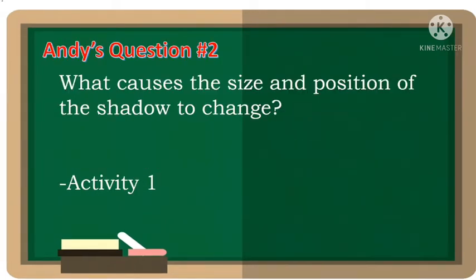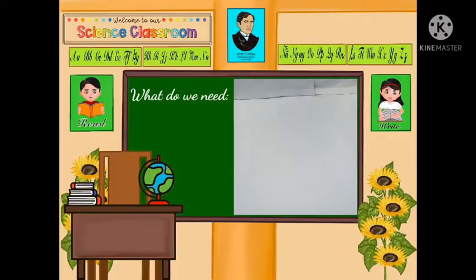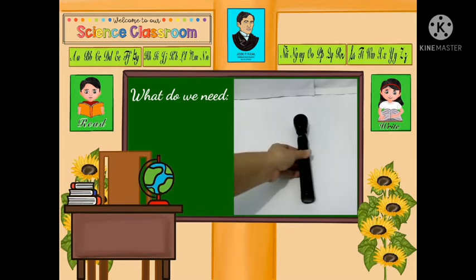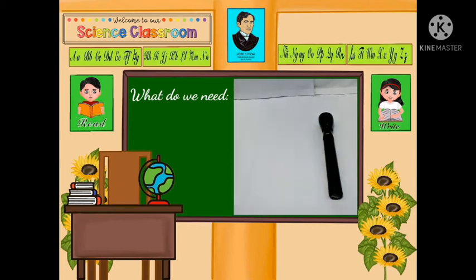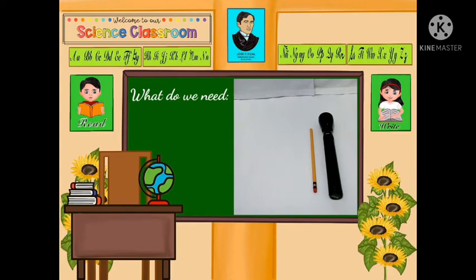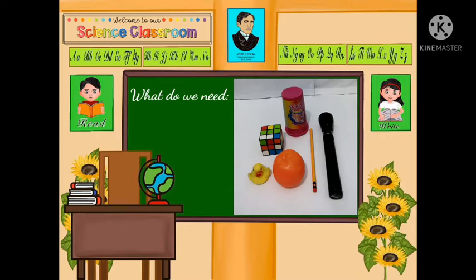To answer Andy's question number 2 — what causes the size and position of the shadow to change — let's do Activity 1. What do we need? A flashlight, and any assorted objects with different sizes and shapes that can be found in your house, like a pencil, an orange toy, a Rubik's Cube, a rubber ducky, and a wooden block. The flashlight is our source of light. Let us place the objects one by one in front of our source of light and observe their shadows.